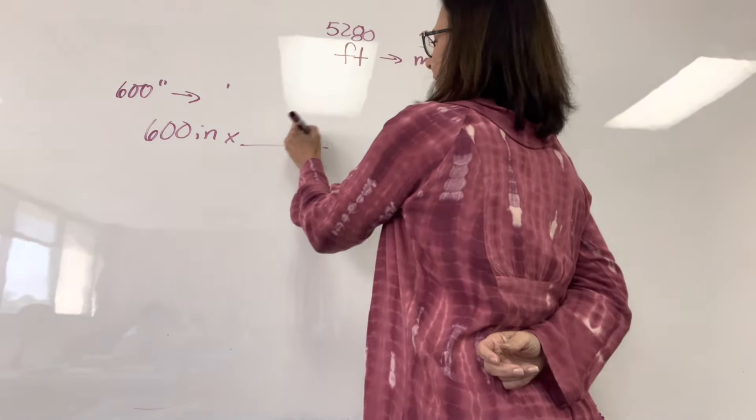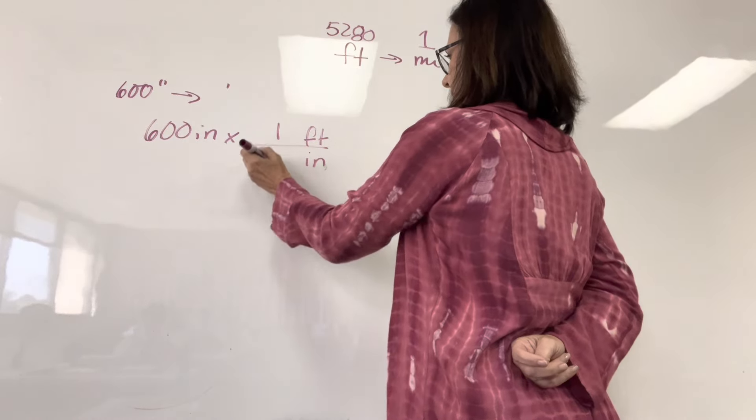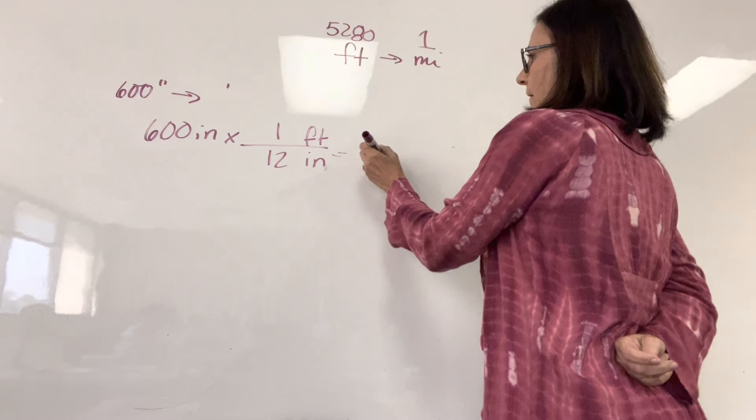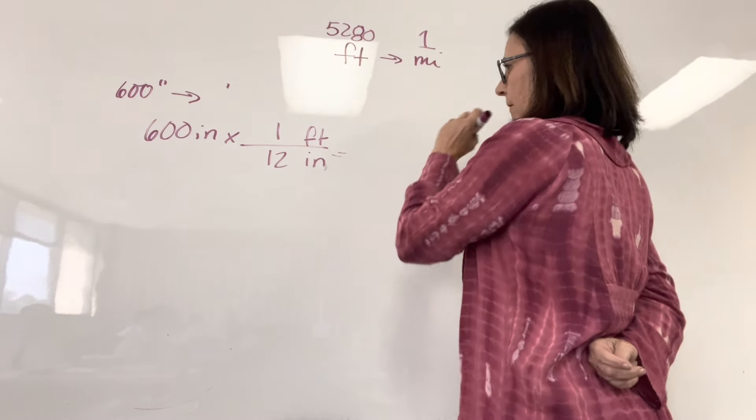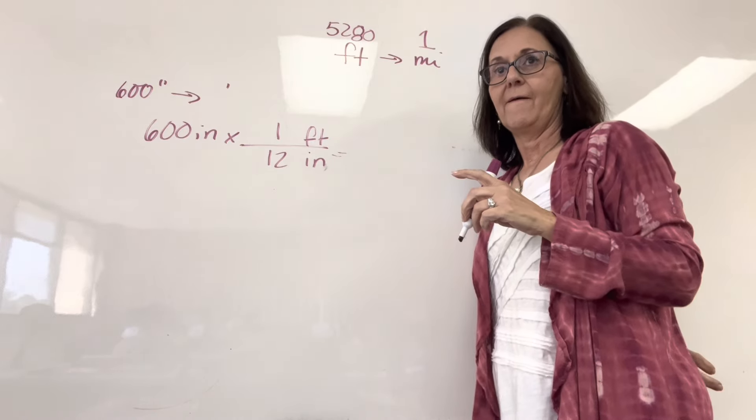So it's 600 inches. I need feet in the numerator, inches in the denominator. 1 over 12. What's 600 divided by 12? 60. What's 600 divided by 12? Somebody do that in the calculator. 50.